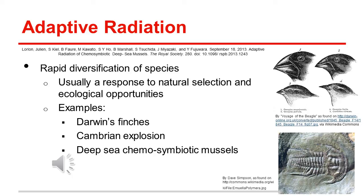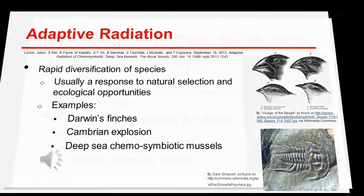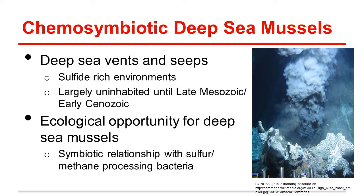This leads us into the last group: the deep-sea chemosymbiotic fauna. Deep-sea vents and seeps are sulfide-rich environments that were largely uninhabited by the late Mesozoic and early Cenozoic. As a result of this unoccupied niche, there was an ecological opportunity for deep-sea mussels to inhabit them. Deep-sea mussels have a symbiotic relationship with sulfur and methane-processing bacteria, allowing them to harvest energy without the sun.